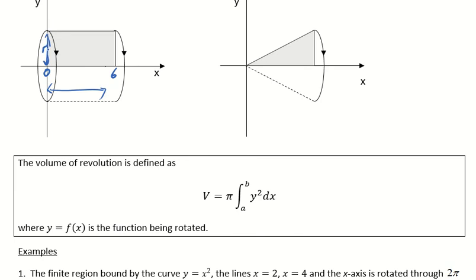So r squared, that's what you get here, r squared times pi is pi r squared, which is the area of one of those circular cross sections. And then when you stretch it out between a and b, that creates that length.